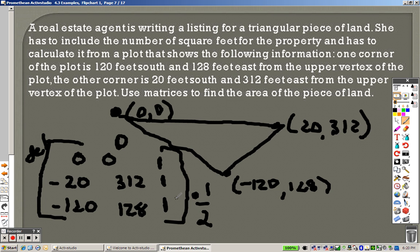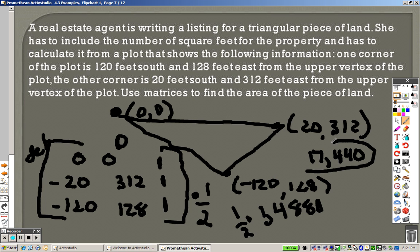And then when we do the determinant of b, we get this. We get 34,880. Then you need to take half of that, because it's like 1 half times the base times the height. So take times that by half, and your final answer is the area is 17,440 square feet.